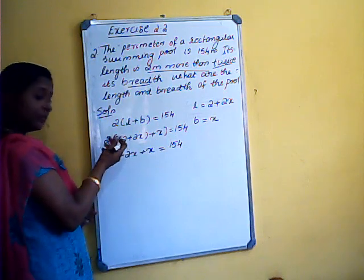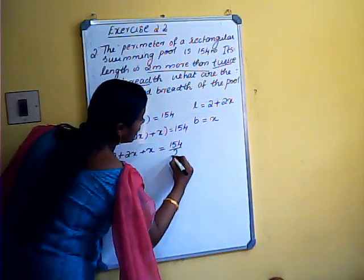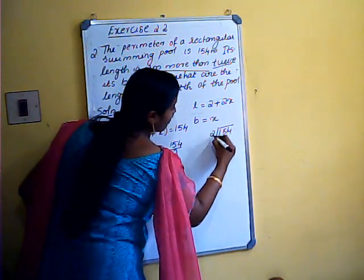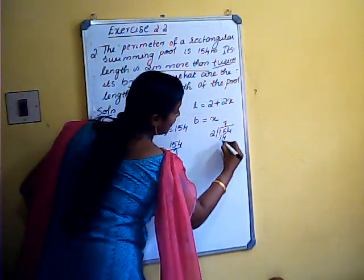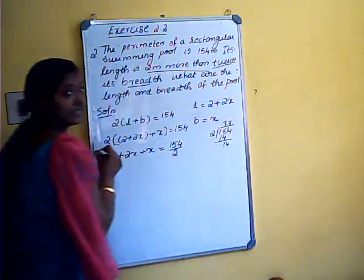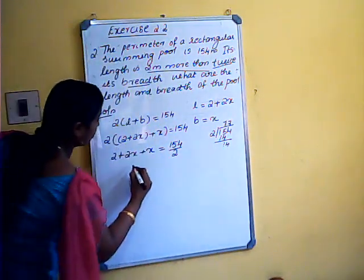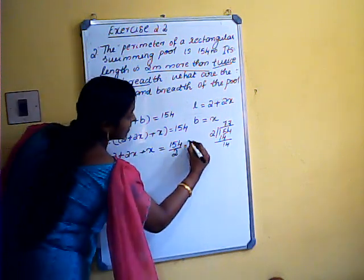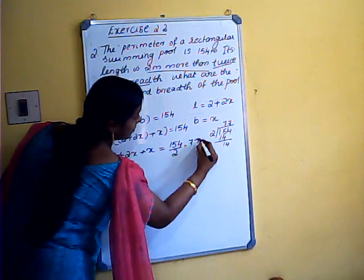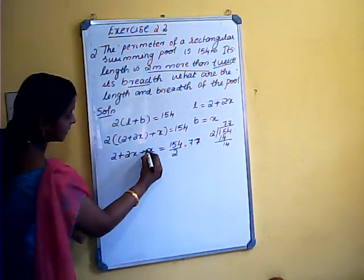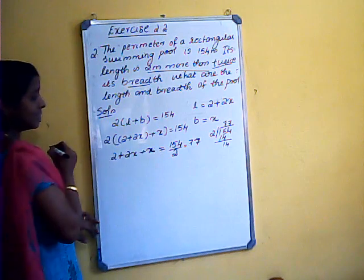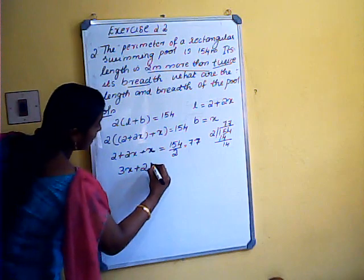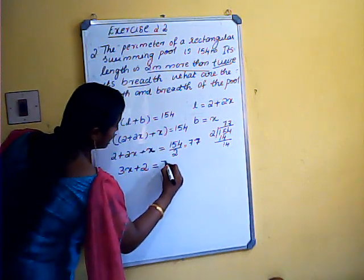After the equality sign, dividing by 2, we get 154 divided by 2 equals 77. So 2 plus 2x plus x equals 77. Combining like terms, 2x plus x equals 3x, giving 3x plus 2 equals 77.